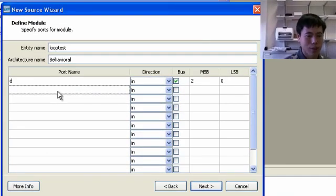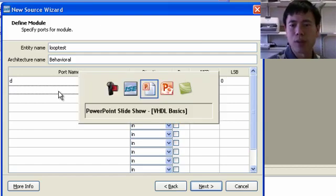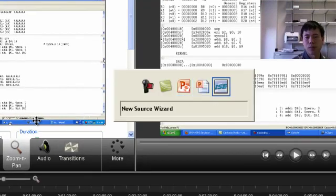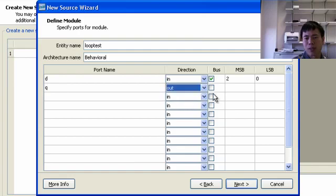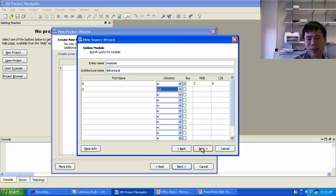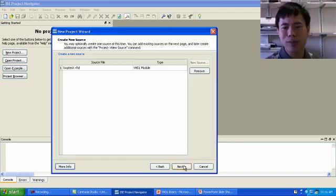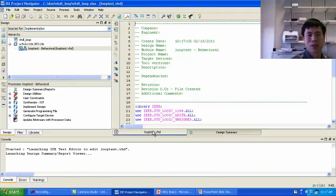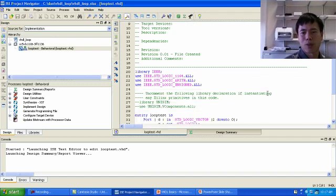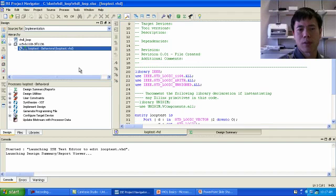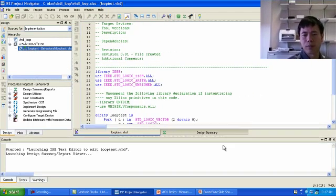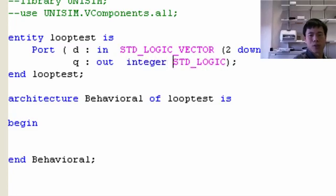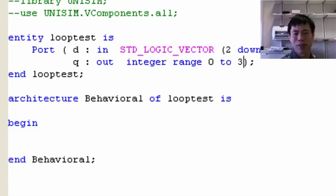And then output. The output Q, integer. Since it is an integer, we will specify that later. Select next, and then finish. Click next again, finish. So here's our code here. We can scroll down a little bit to the code. So in output, we specify integer range 0 to 3 instead of standard logic, modify it a little bit.